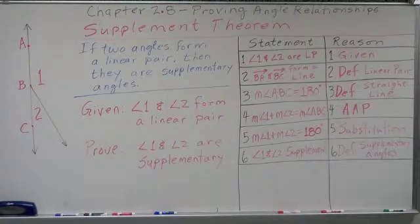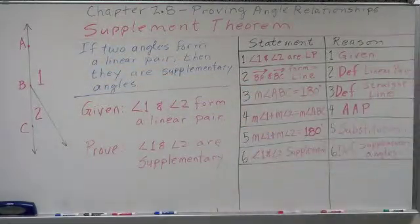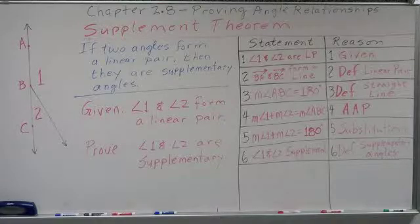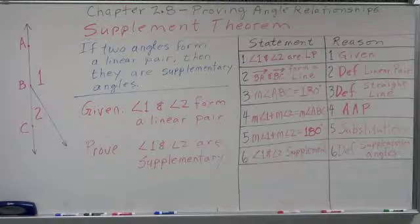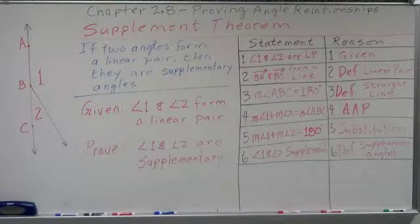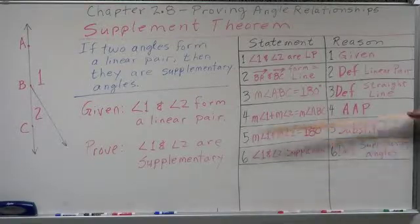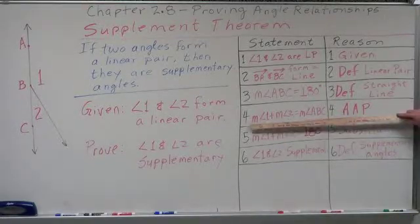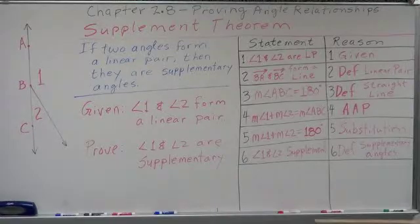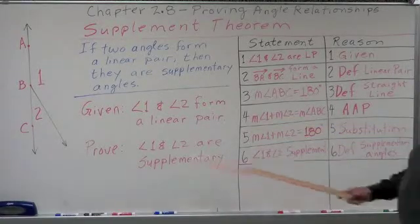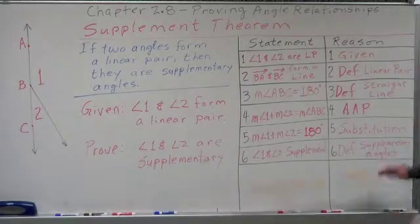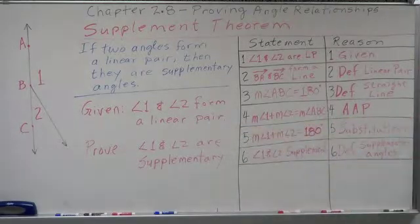Statement number three: the measure of angle ABC formed by those two rays is 180. Why? Because of the definition of a straight line — a straight line is formed by two opposite rays. From the angle addition postulate, we know that the measure of angle one plus the measure of angle two equals the measure of angle ABC.